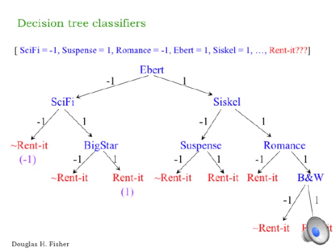In the case of this particular movie which we want to classify, it's not a sci-fi movie, sci-fi equals -1. It is a suspense movie, suspense equals 1. It's not a romance. And Siskel and Ebert both recommend it. We want to ask, should we rent it or not? What does the decision tree prescribe that we do?